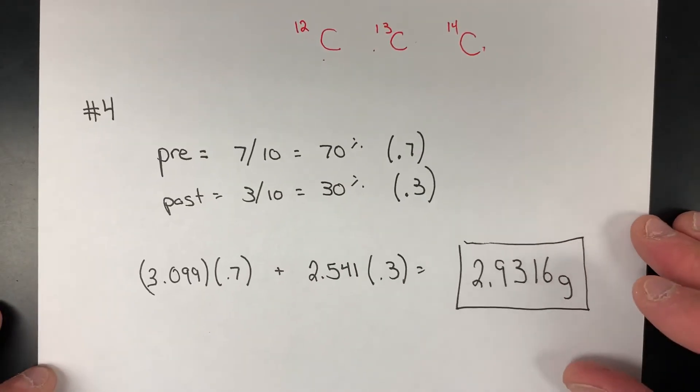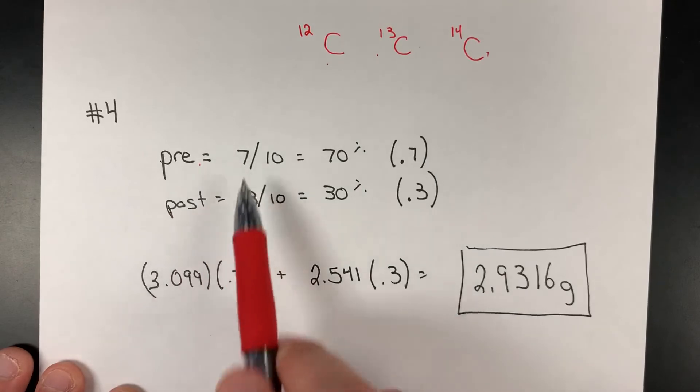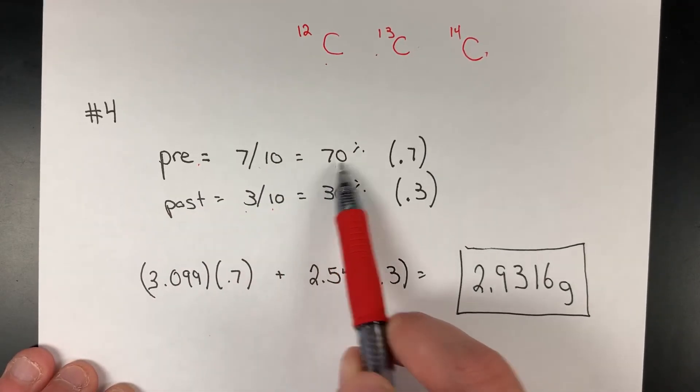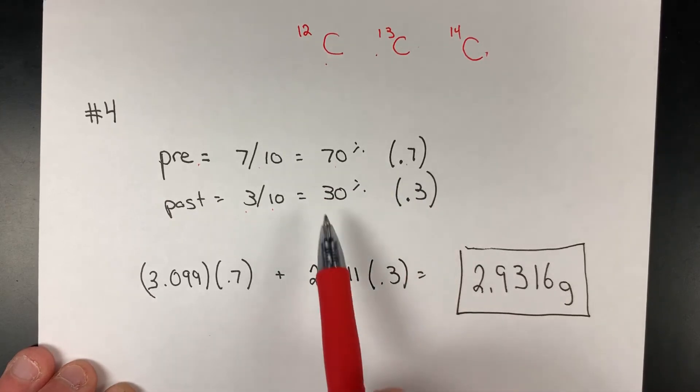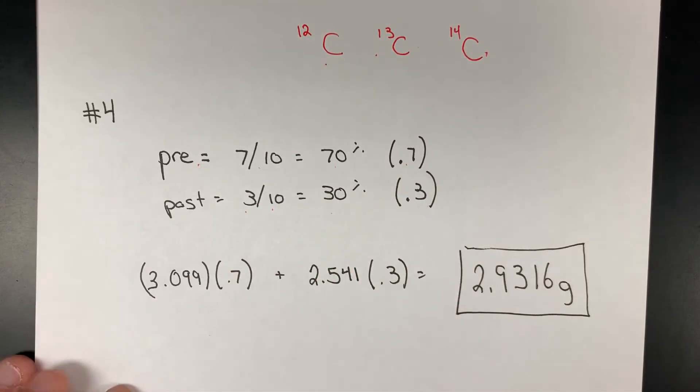For number four, given what we already solved in question one, we identified that of the 10 pennies inside our film canister, seven were pre and three were post. This translates to 70% being pre (0.7 as a decimal) and 30% post (0.3 in decimal form).